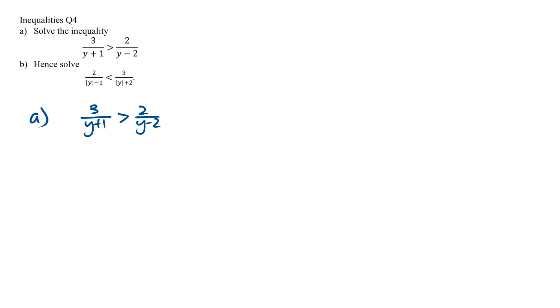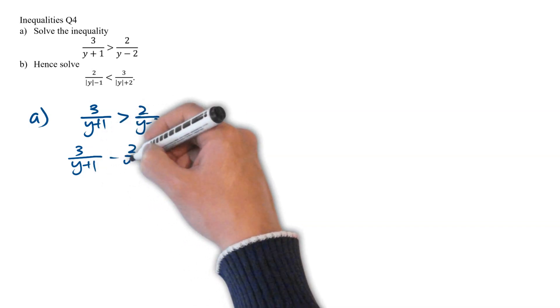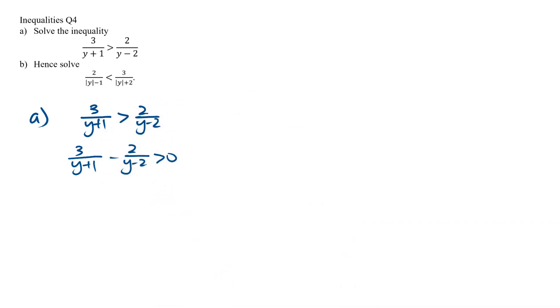The first thing we should be doing is to bring the term on the right-hand side over to the left-hand side, such that we get 3 over y plus 1, minus 2 over y minus 2, greater than 0.